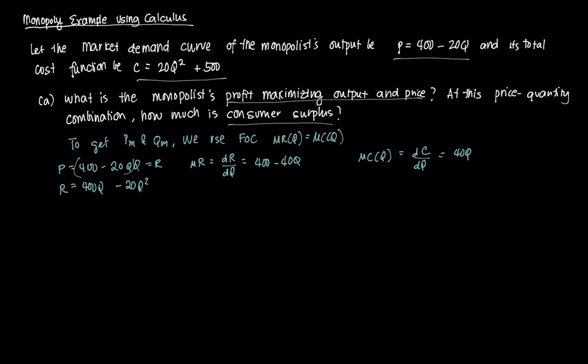If we apply the FOC, we equate MR and MC, so 400 - 40q = 40q. Then we get 400 = 80q, divide both sides by 80, and we get q = 5. Then we substitute this q = 5 into the price equation.